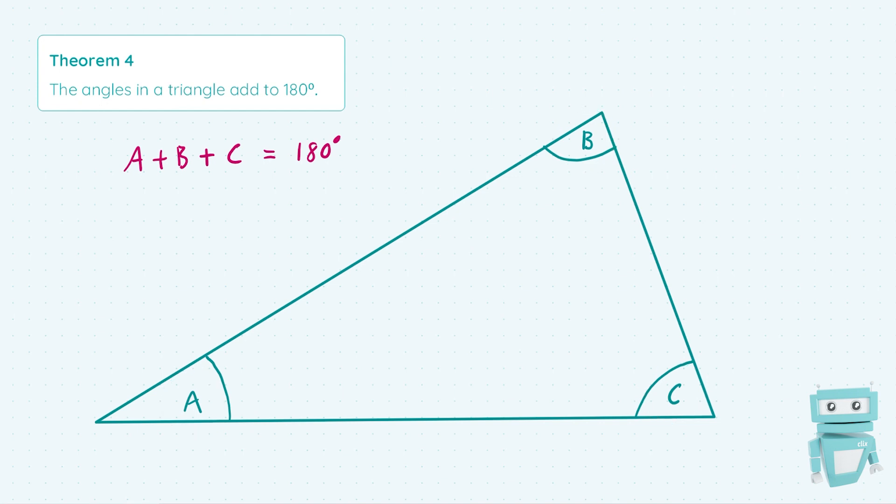This is useful to know because imagine we were given the values of A and B. For instance, if we knew that A equals 40 degrees and B equals 80 degrees,